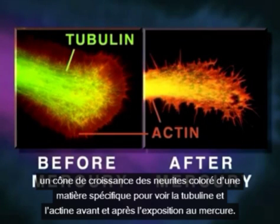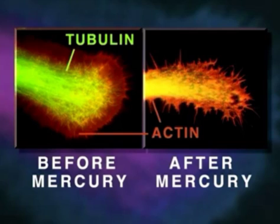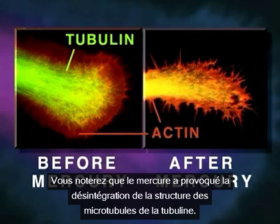Shown here is a neurite growth cone stained specifically for tubulin and actin before and after mercury exposure. Note that the mercury has caused disintegration of tubulin microtubule structure.